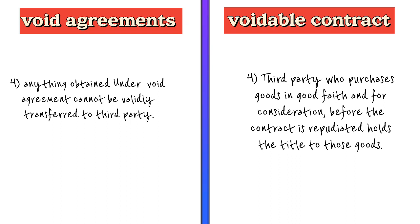The fourth difference is that anything obtained under a void agreement cannot be validly transferred to a third party. But in the case of a voidable contract, a third party who purchases goods in good faith and for consideration before the contract is repudiated acquires title to those goods.